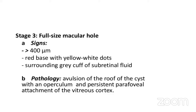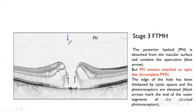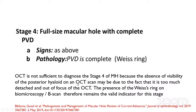Stage 3 is a full-size macular hole, more than 400 microns, with a red base with yellow dots and a surrounding grey cuff of subretinal fluid. The posterior hyaloid membrane is completely detached from the macular surface, forming a pseudo-operculum, but still attached to the optic disc (incomplete PVD). The edges are thickened by cystic spaces and photoreceptors are elevated. Stage 4 is a full thickness macular hole with complete PVD — same as stage 3 but with a Weiss ring. OCT is not sufficient to diagnose stage 4 due to absence of visibility of the posterior hyaloid membrane; presence of Weiss ring is a valid clinical indicator.